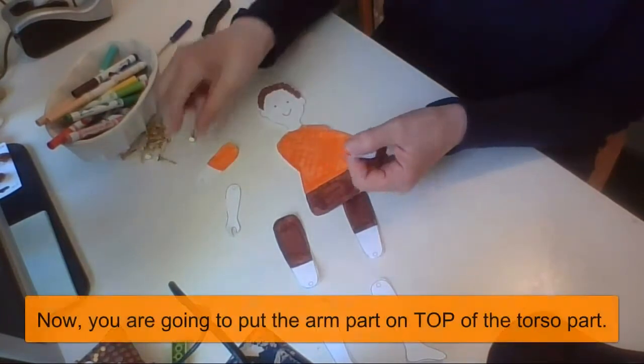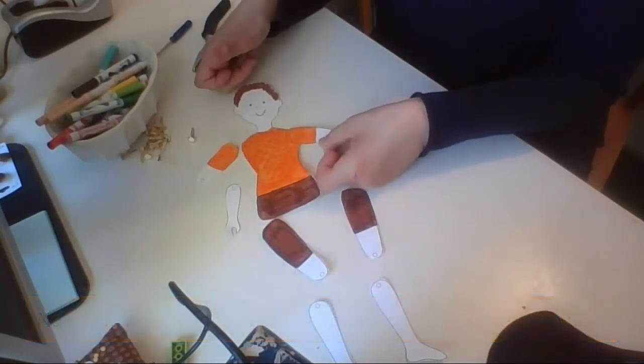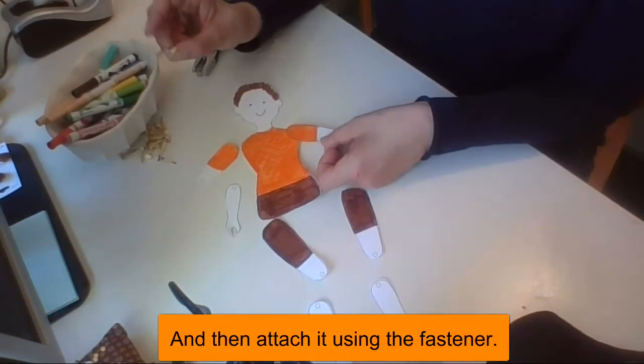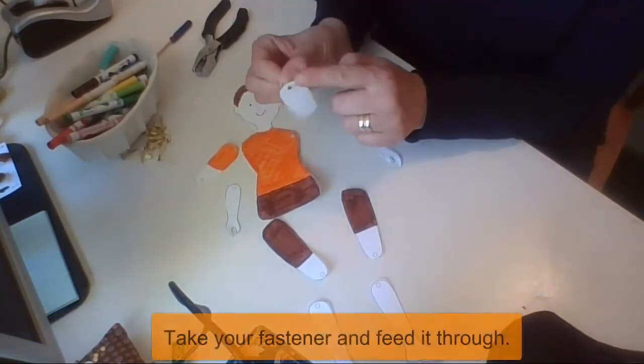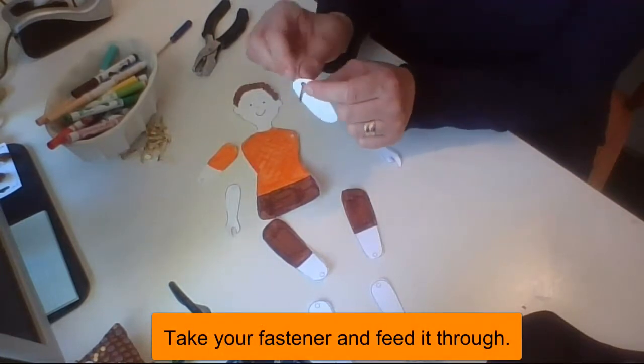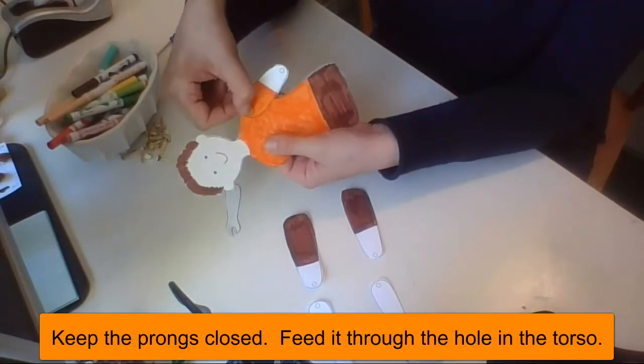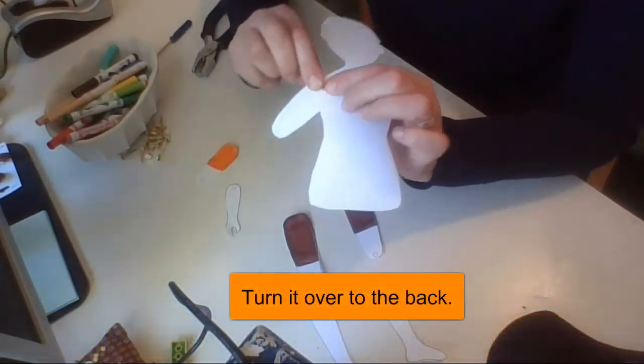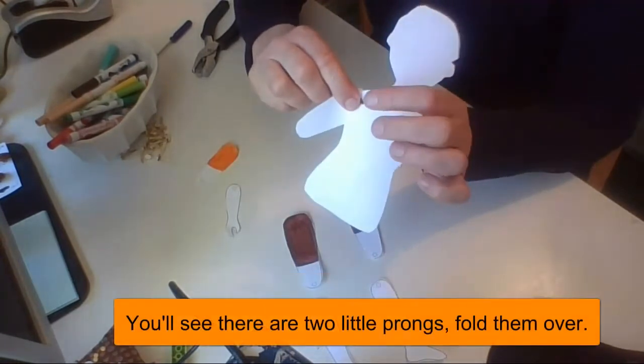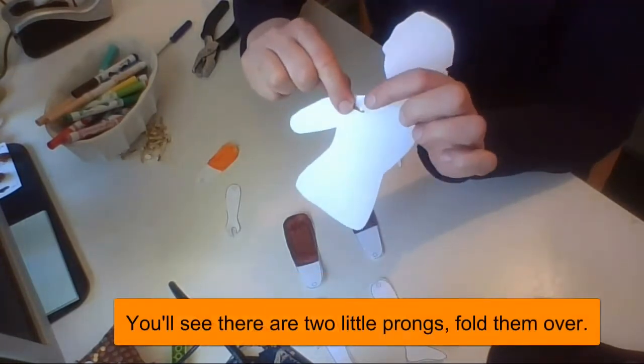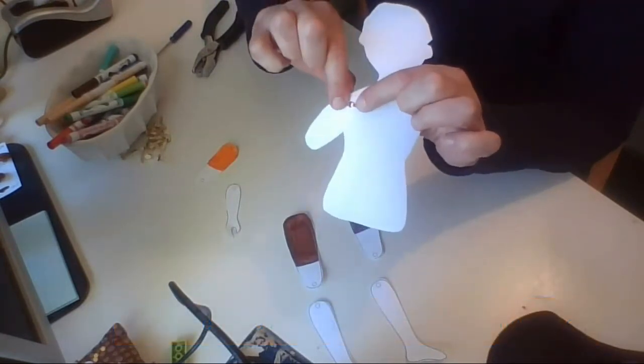There we go. Now you're going to put the arm part on top of the torso part and then attach it using the fastener. So take your fastener, feed it through. You're going to keep the two little prongs closed. Feed it through the arm and then feed that through the torso. Turn it over to the back and you'll see there's two little prongs on the fastener. You'll take the bigger one and fold it over and fold the other one over.